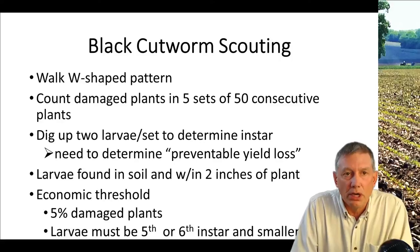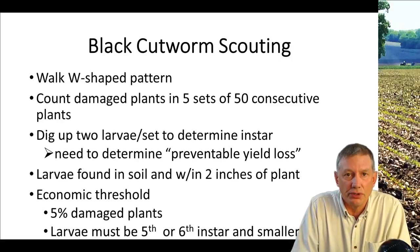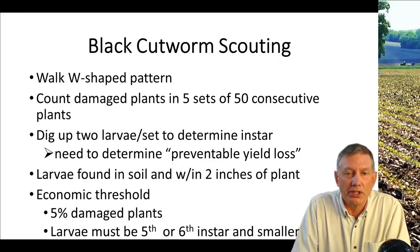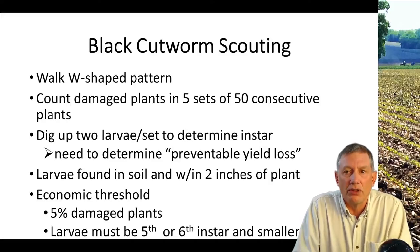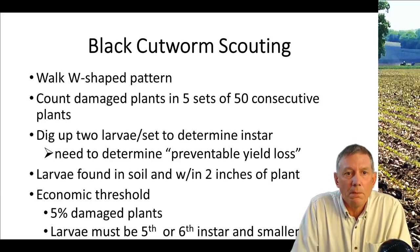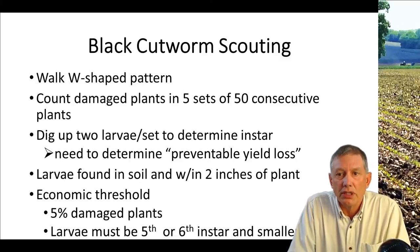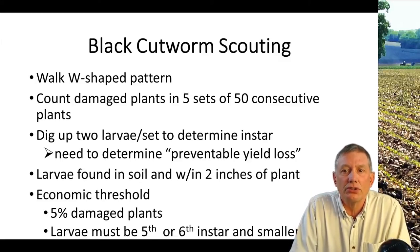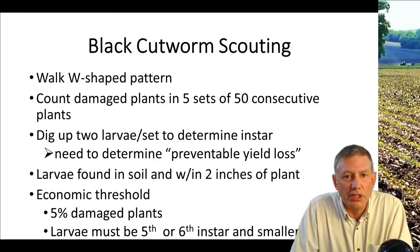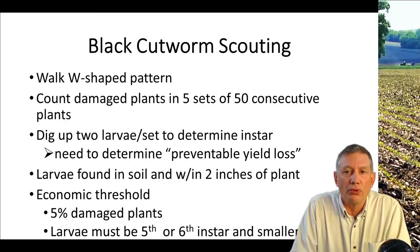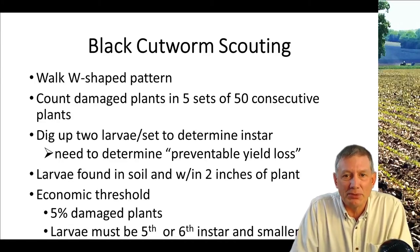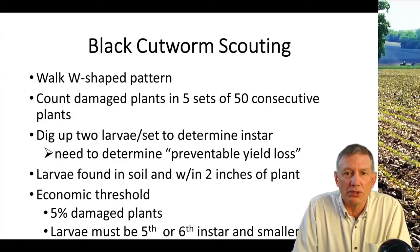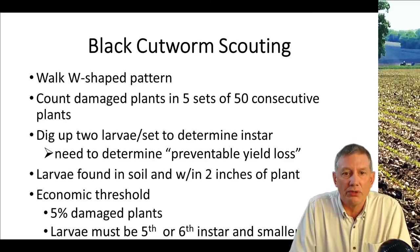To scout for black cutworms, I would suggest that you walk a W-shaped pattern in the field. Count damaged plants in five sets of 50 consecutive plants to get a good random estimate of the amount of damage you have in that field. Also, dig up two larvae in each of those sets to determine instars. That's important because we need to understand what our preventable loss for that field will be — we can't resurrect damage that has already happened, but we have to look at the size of the cutworms and try to determine how much longer they will be feeding. And that's going to factor into our economic threshold.